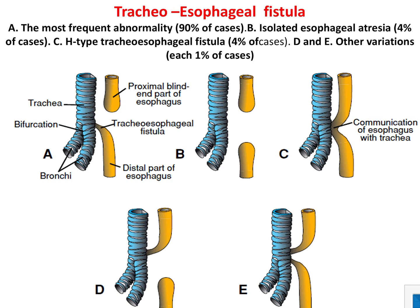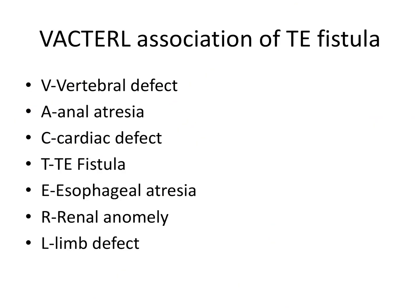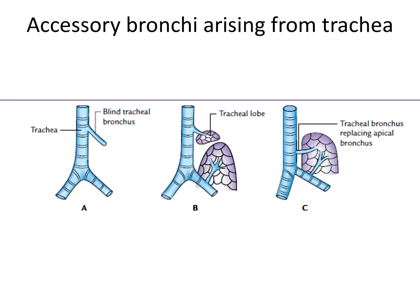If the tracheoesophageal septum formation is defective, it will lead to formation of tracheoesophageal fistula. Most commonly it is type A, in which the upper part of the esophagus is blind and the lower part communicates with the trachea. This fistula is associated with many anomalies called the VACTERL association: V for Vertebral Defect, A for Anal Atresia, C for Cardiac Defect, T for Tracheoesophageal Fistula, E for Esophageal Atresia, R for Renal Anomaly, and L for Limb Defects.